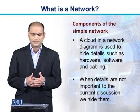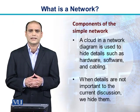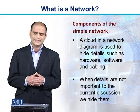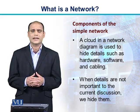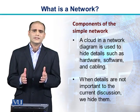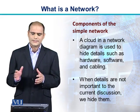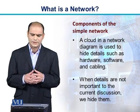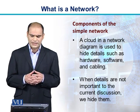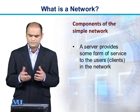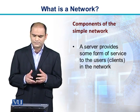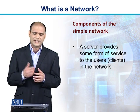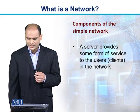Looking at a simple network, these are the basic components. First, there's a cloud in the network diagram, which is used to hide the details such as hardware, software, and cabling. We use the cloud whenever we are least concerned about the detail and want to show a simplified diagram of the network. A server provides some kind of service — for example, it will allow User 1 and User 2 to access files from the server over the network.